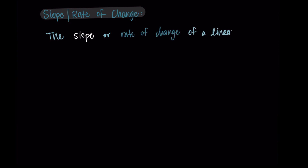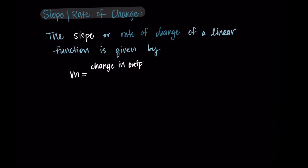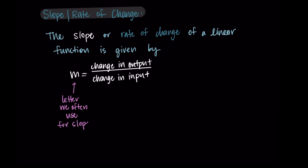The slope or the rate of change of a linear function is given by the following. We use m as the letter to represent slope, and m is equal to the change in output divided by the change in input. This is taking a ratio of how the outputs change with respect to the inputs — how do the outputs change as the inputs change? We can summarize this with mathematical notation using delta y over delta x.